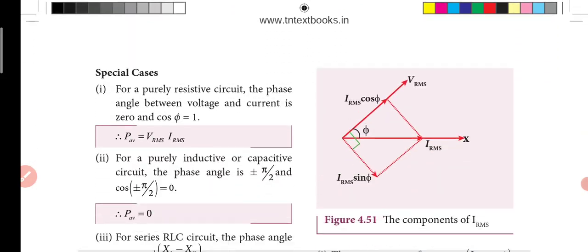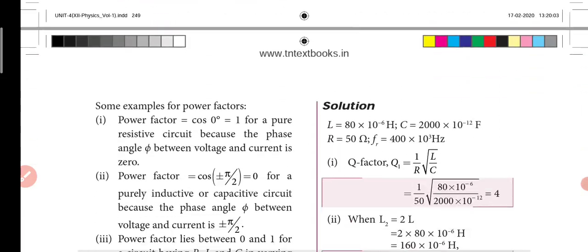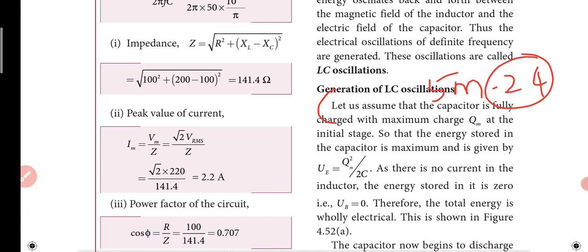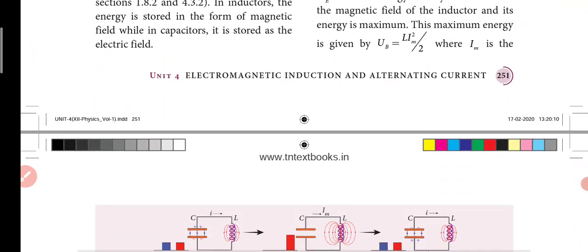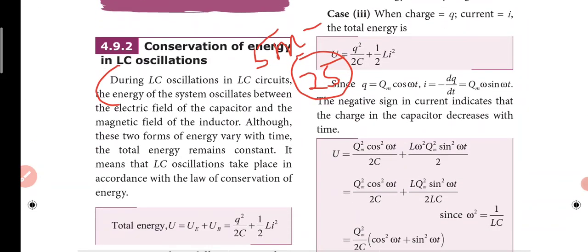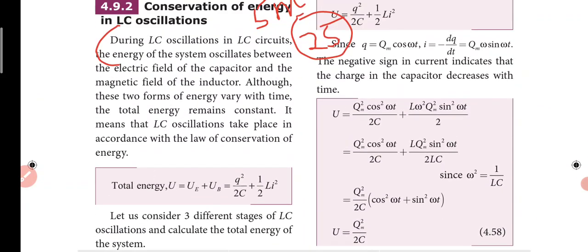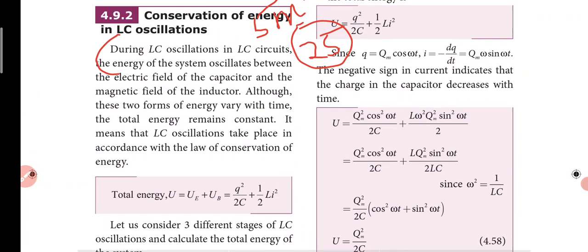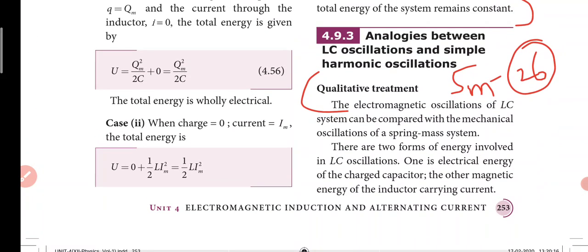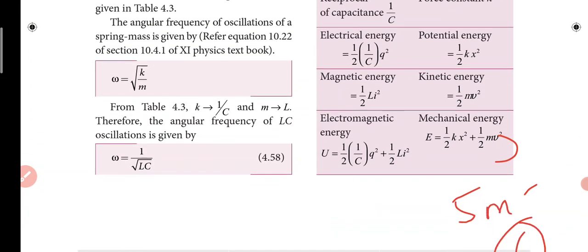Power in AC circuit is a derivation question with special cases for 5 marks - twenty-third question. Generation of LC oscillation is twenty-fourth question with diagram and theory. Conservation of energy in LC oscillation: case one, case two, case three - very very important question with easy derivation. Twenty-sixth question: qualitative treatment in table or column format.